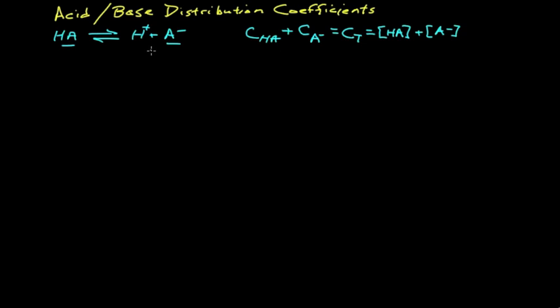Now we can use that and some simple definitions to come up with an expression for the fraction of the acid form. I'll call that the fraction in the HA form, and that's at equilibrium. In other words, it's the concentration in this particular form over the total scorecard for this family.